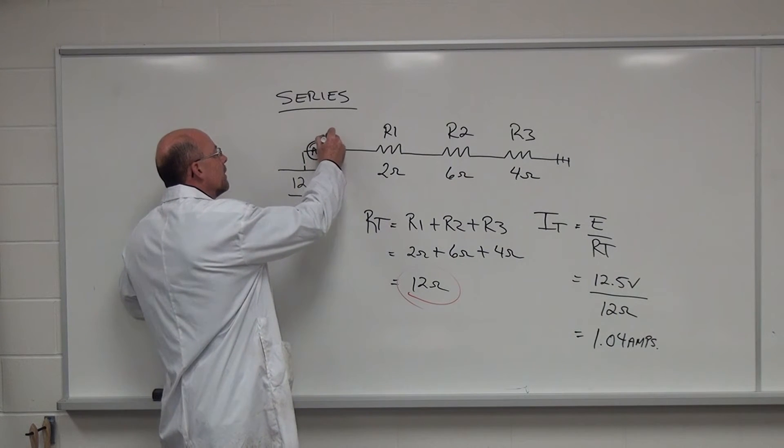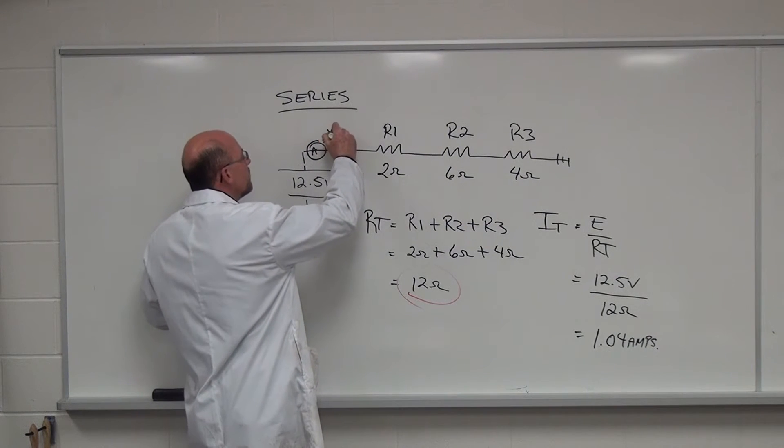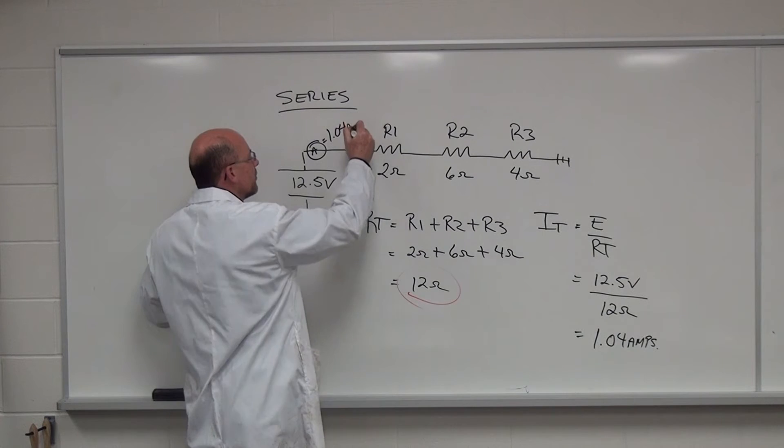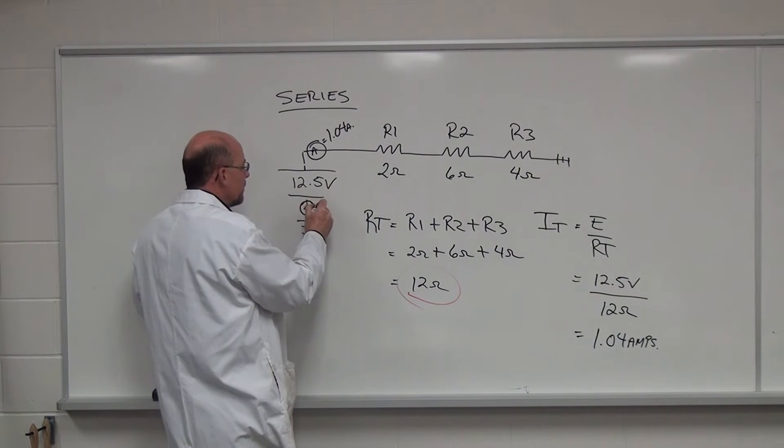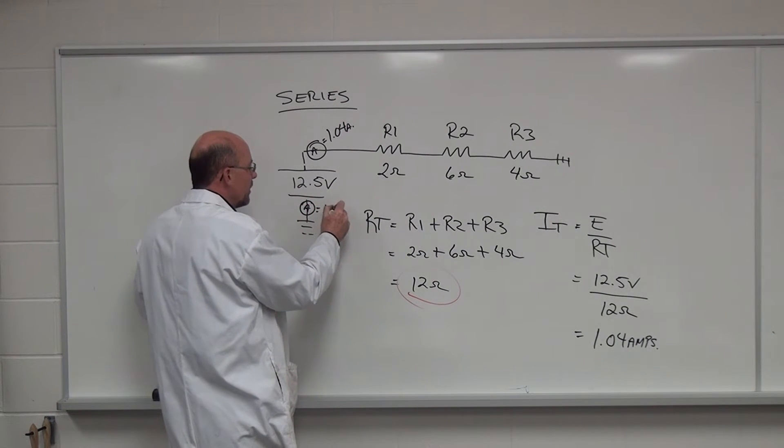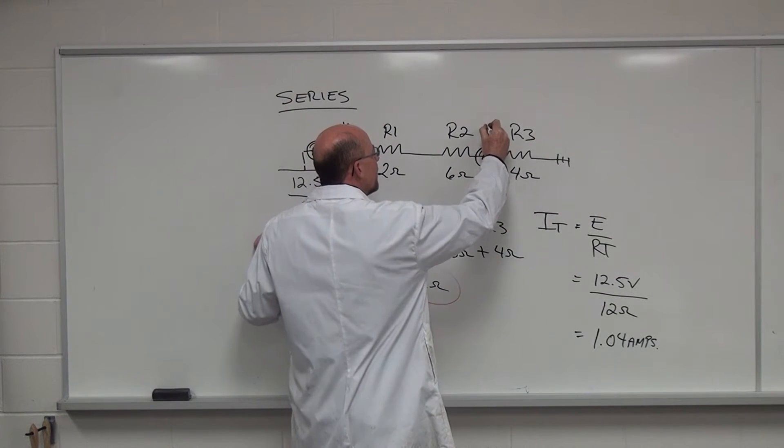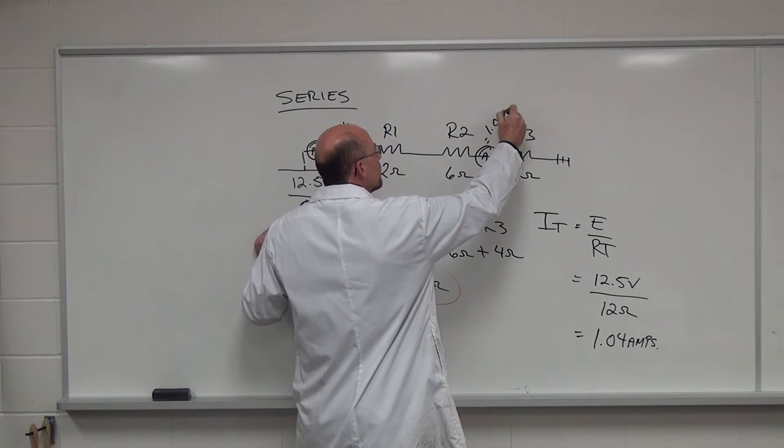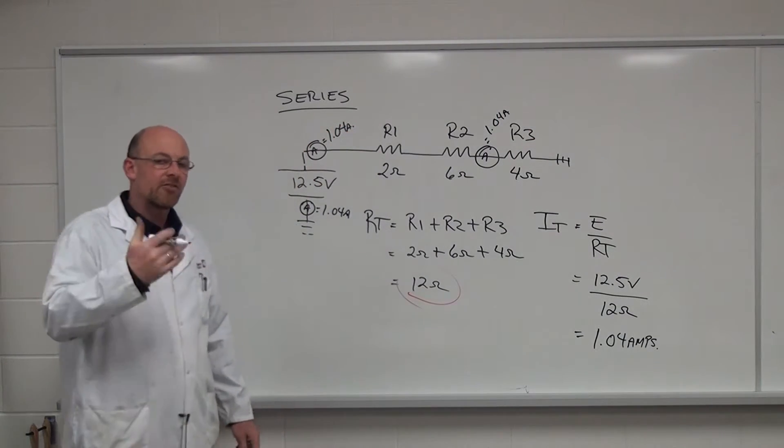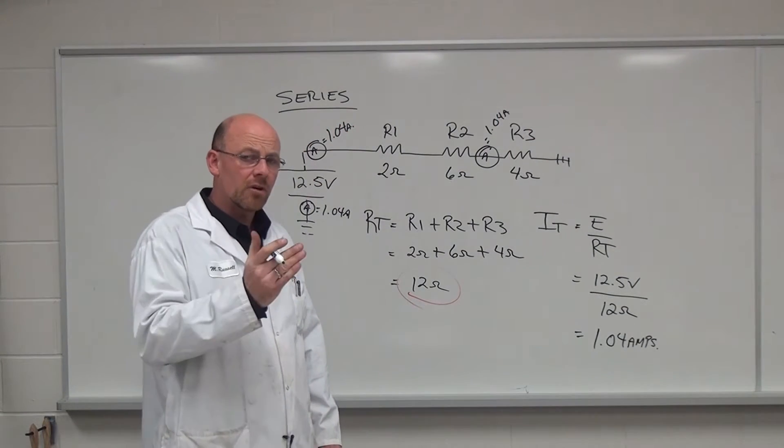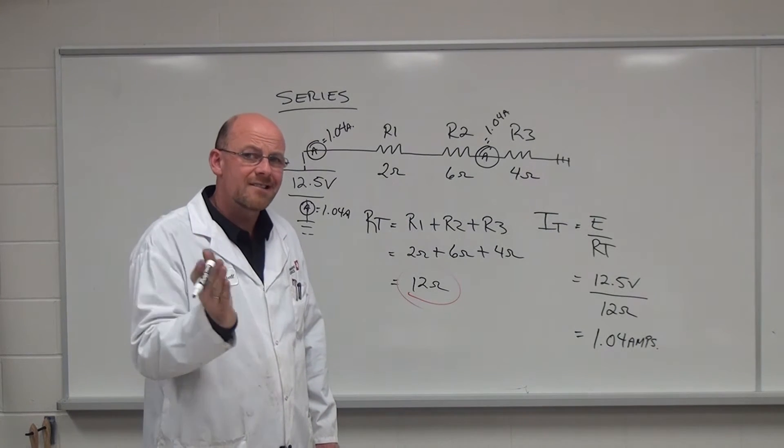So whatever leaves here is going to end up here at the circuit. So if I start out over here with an amp meter that equals 1.04 amps, if I was to put an amp meter here then I would end up with 1.04 amps. And if I was to pick it up anywhere in the circuit I would have 1.04 amps. Because in a series circuit the current flow is the same throughout the entire circuit.